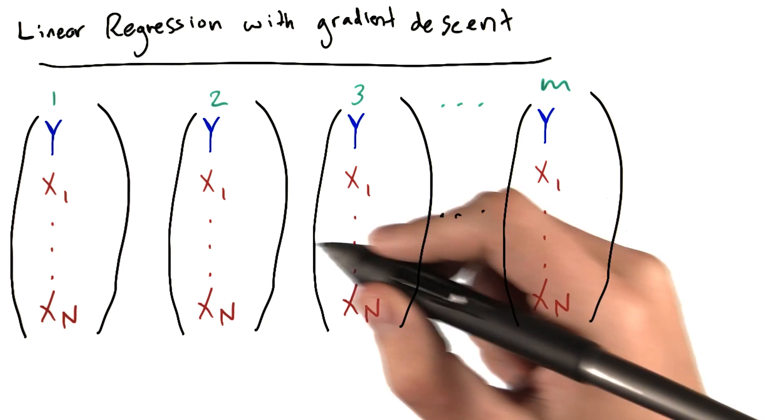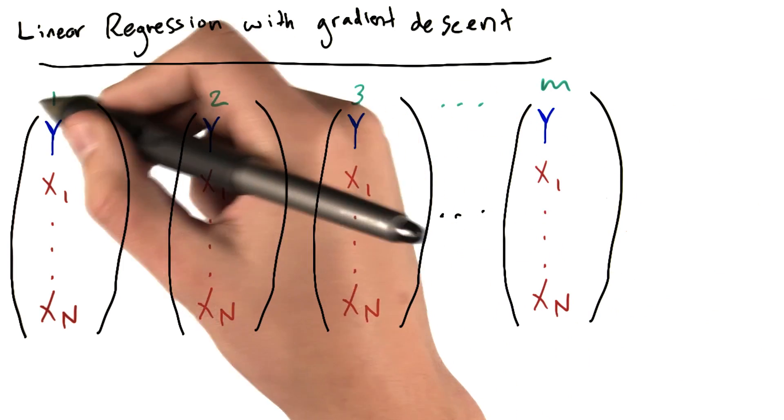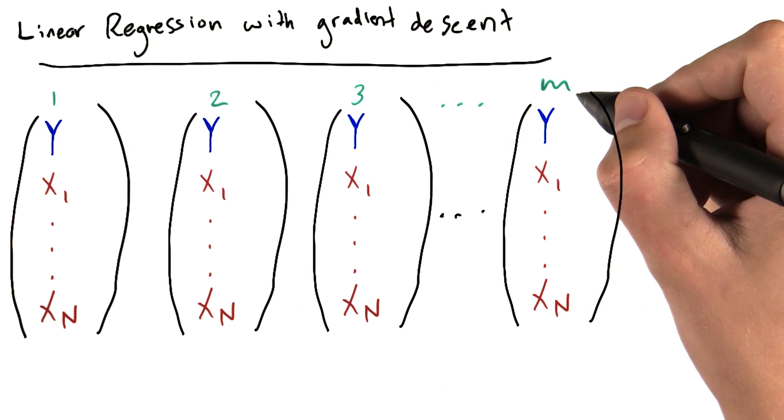When performing linear regression, we have a number of data points. Let's say that we have 1, 2, 3, and so on, up through m data points.